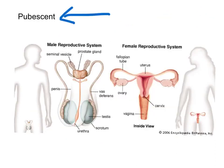Pubescence, or puberty, occurs at the beginning of adolescence, usually around the ages of 8 to 13 for girls and 10 to 15 for boys. During this time, hormones from the brain stimulate the ovaries in girls and the testes in boys, and in response, a great number of things occur. The brain, bones, muscles, blood, skin, hair, breasts, and the sexual organs grow.